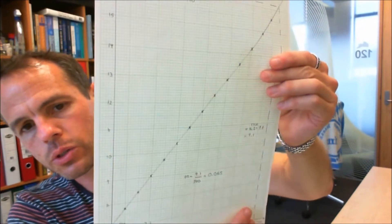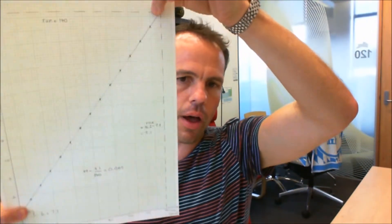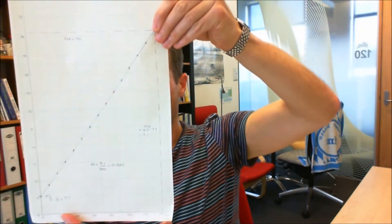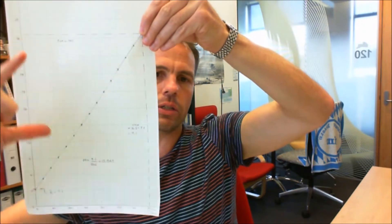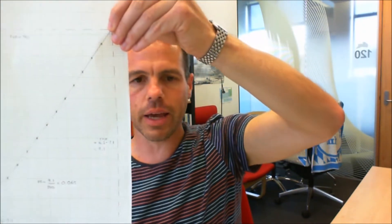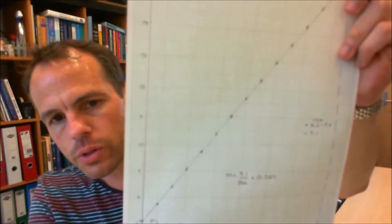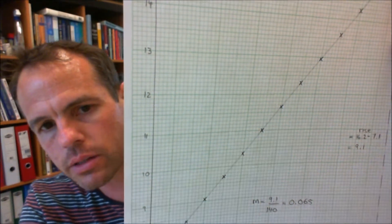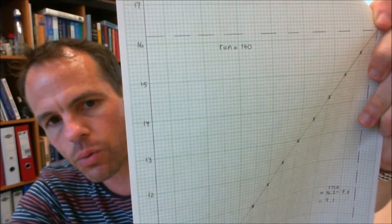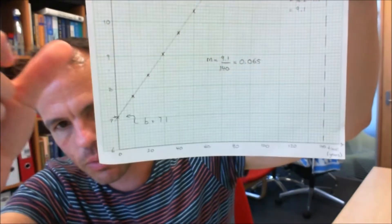Basically what you do is look for the maximum range of the line, work out what the run over that region is, work out what the rise over that region is, and take the gradient as rise over run in the traditional way. You'll notice from the left axis that the rise will be in units of log(P), running from about 16 back to about 7. Dividing that by the number of years gives you a gradient of 0.065, which is k in the exponential equation.